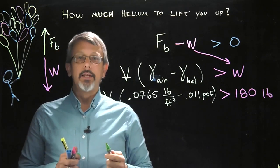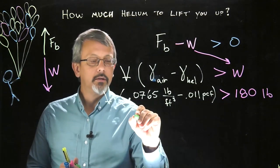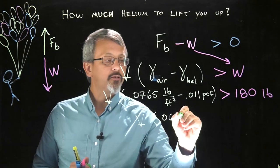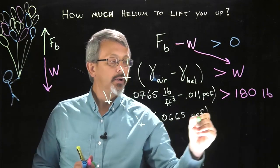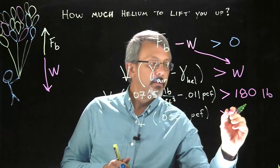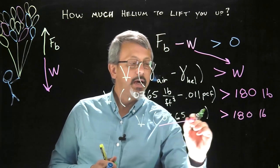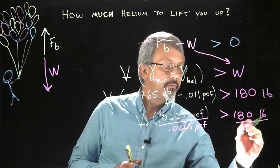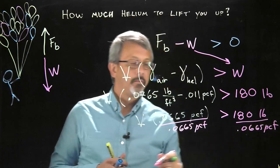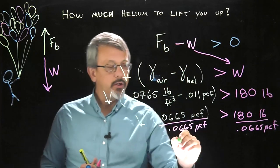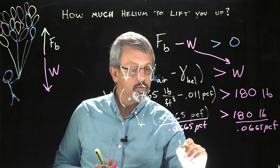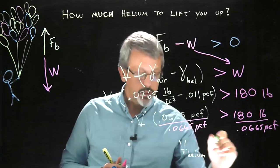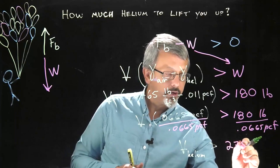Now, it's just simply a matter of doing a little bit of math. Take my volume, subtract these things, we get 0.0665 PCF. We realize that that has to be greater than our 180 pounds. Divide both sides by the 0.0665 PCF, and we get a value for our volume. The volume of the helium in the balloons needs to be greater than, in order to make me float, 2750.